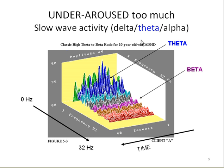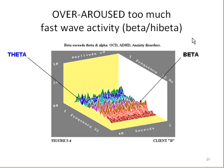Here is a compressed spectral array from 0 to 32 Hz over a time period of 40 seconds. This watershed diagram shows that theta, which is dark blue, is far greater than the beta — this client is under-aroused. This is a 10-year-old boy with an attention deficit disorder. On the other hand, this client is over-aroused — the beta is far greater than the theta. This client is anxious, could have OCD, or could be the beta type of ADHD.